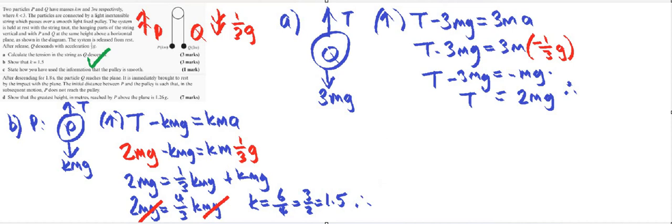Part c is a definitions question. It says state how you've used the information that the pulley is smooth. Well, if there's no friction, then the tension of P is equal to the tension for Q. We used that fact because we said in part b when our T was equal to 2mg, which is the same tension we've got for Q.